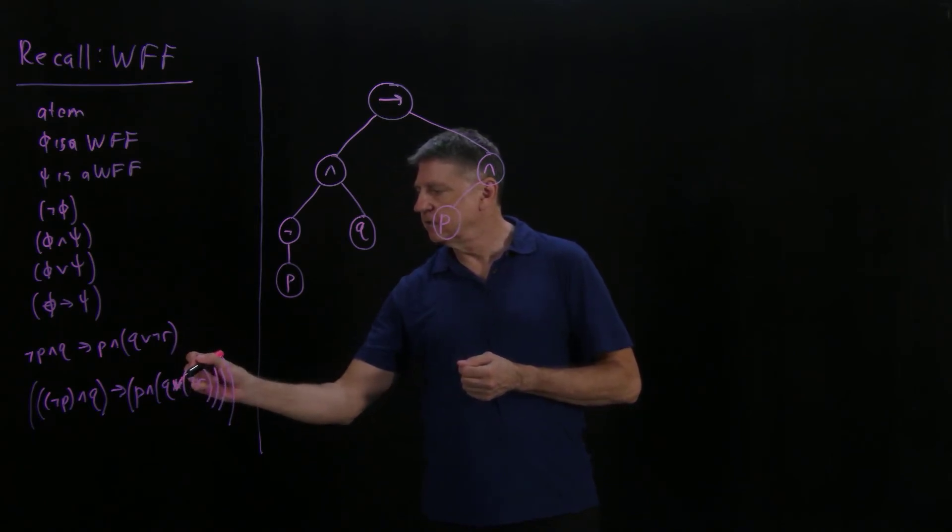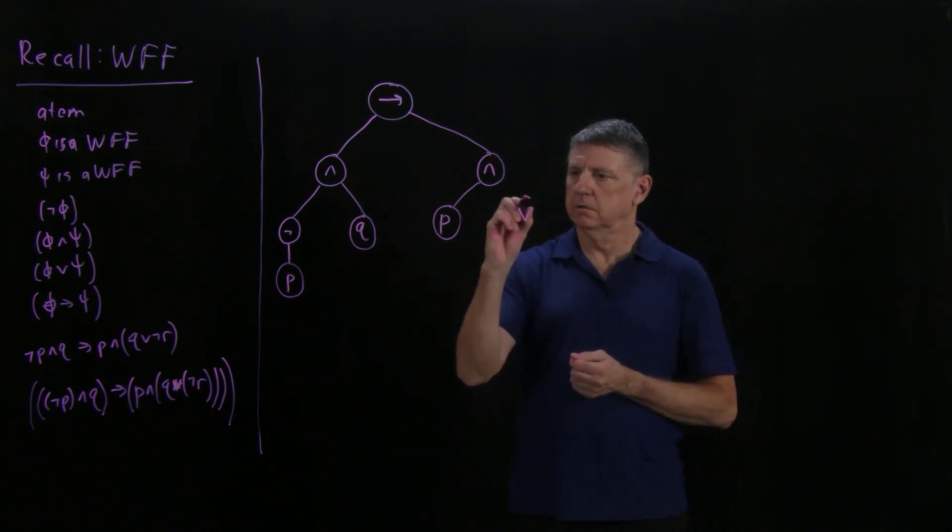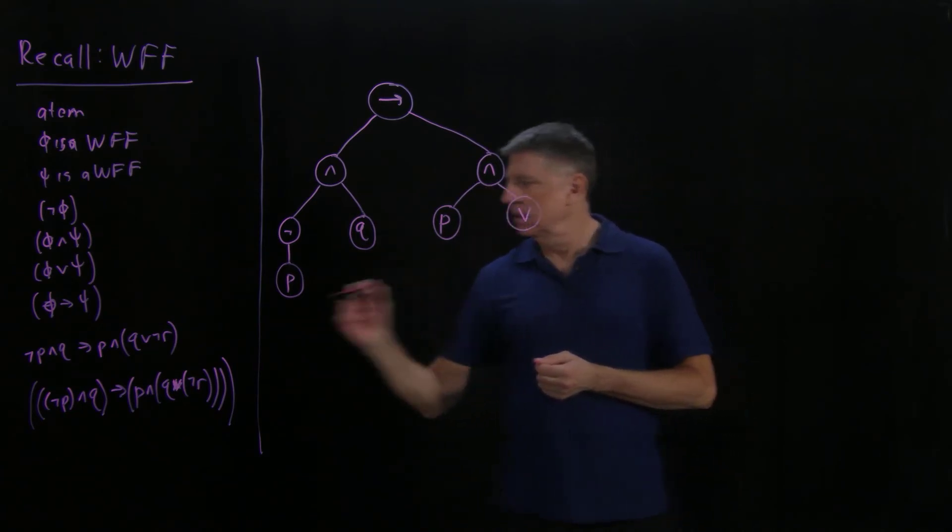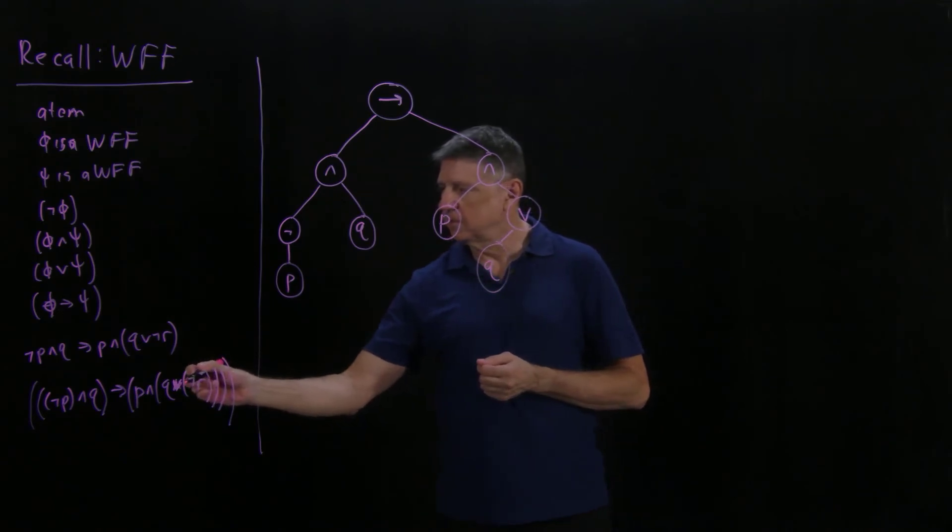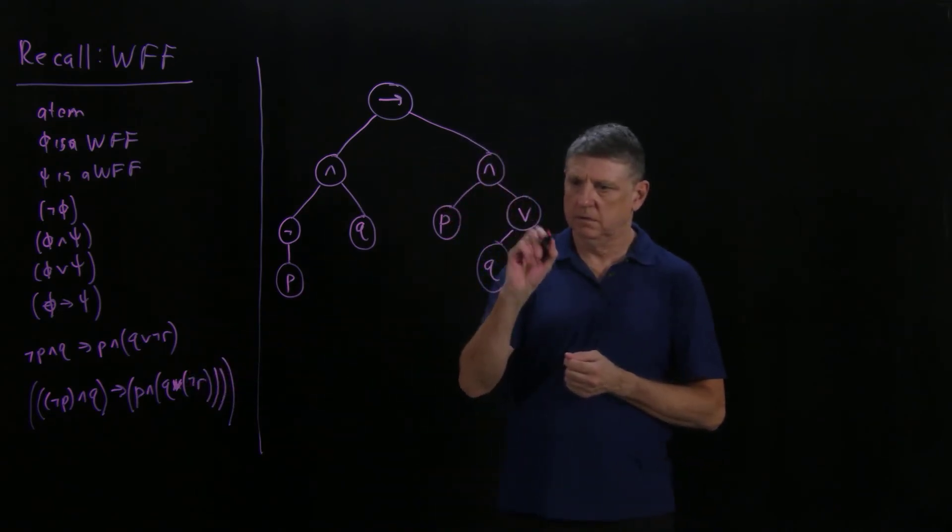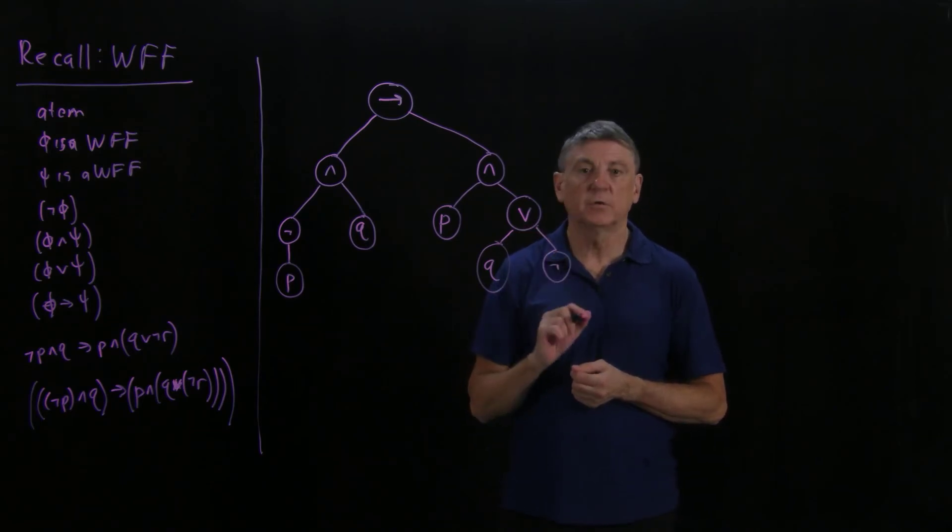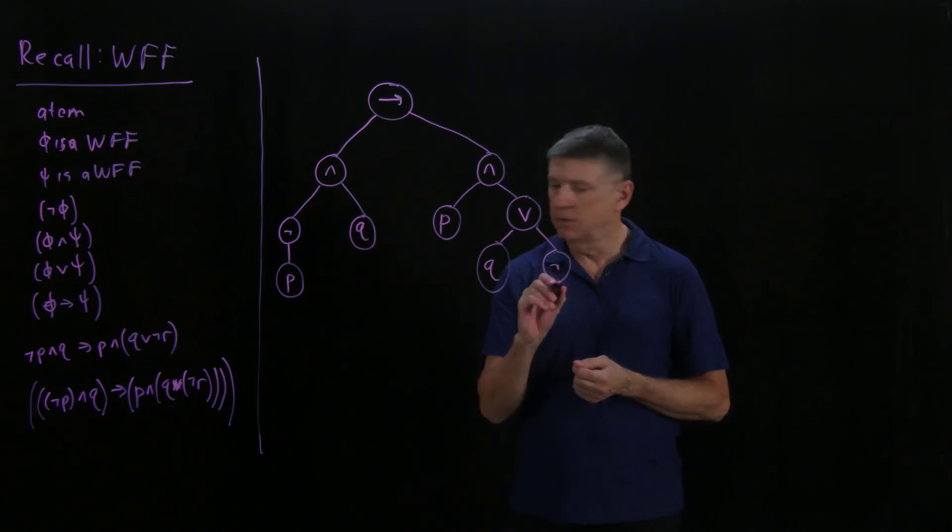The left disjunct is the atom q, and the right disjunct, because it's in parentheses, is an operator, and the operator in this case is negation, and we know that negation has one operand, which in this case is the atom r.